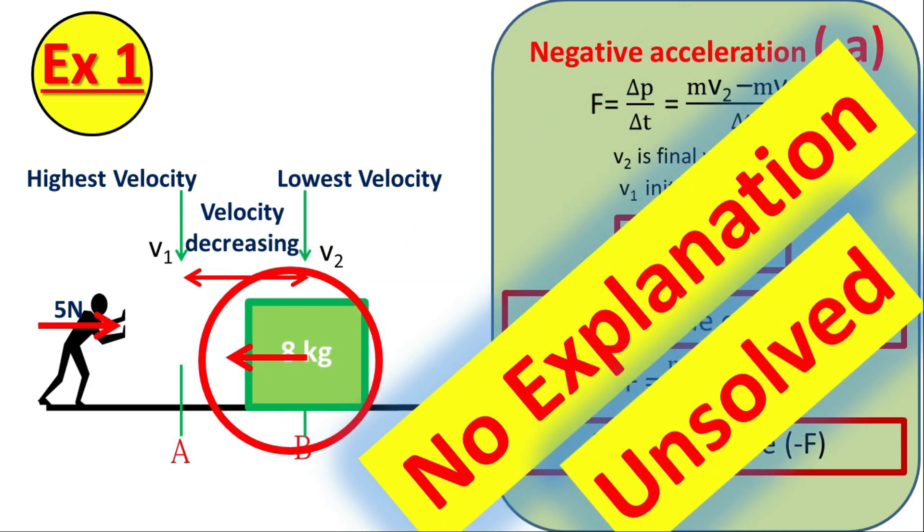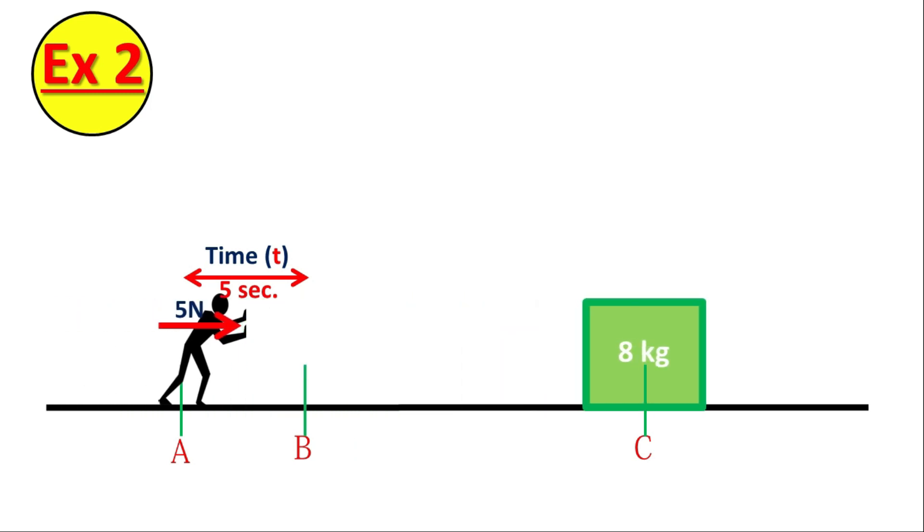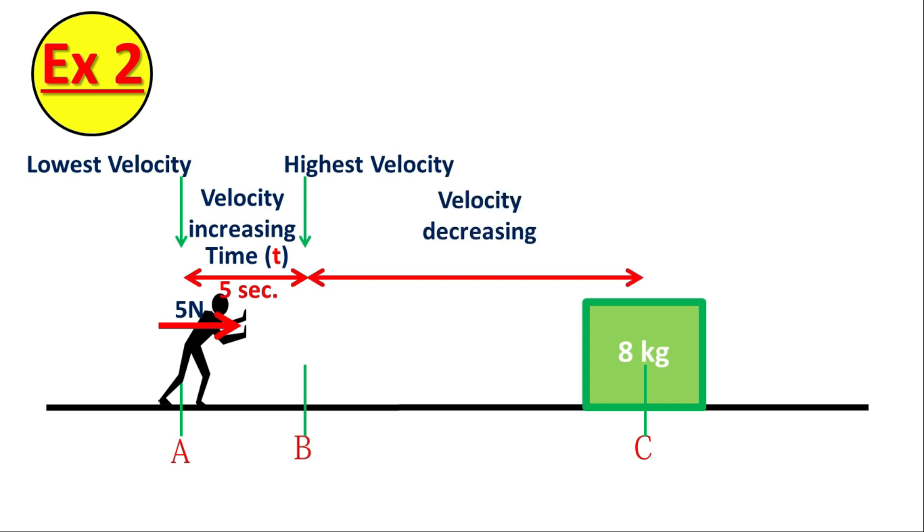Now, one more little complicated example that will definitely shred your belief in F is equal to mA and will give you a brainstorm. Here's the example 2. Now, we push the same object having mass of 8 kg with 5 N force, but for 5 seconds continuously, from point A to point B. Now, you will notice that object starts at point A and velocity increases continuously till point B. And after point B, velocity of the object starts decreasing and stops at point C. I have done many practicals. You also can do at your place. It happens exactly.